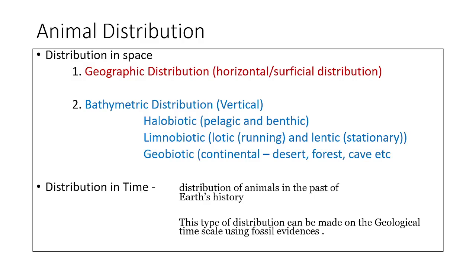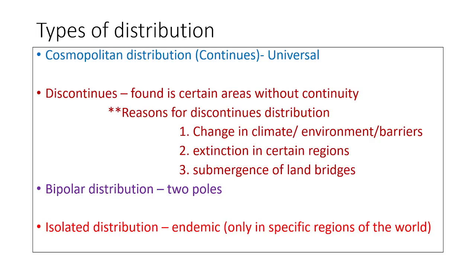Coming to distribution in time — the distribution of animals in the past, as recorded through earth's history or the geological time scale, is called distribution in time. By studying the geological time scale with different types of fossils obtained from sediments, we get to know what animals were present on earth at particular times. This study of animals in the past of earth's history is usually done using fossil evidence.